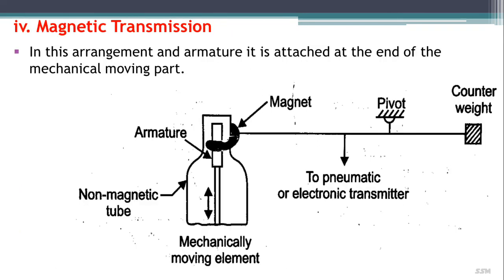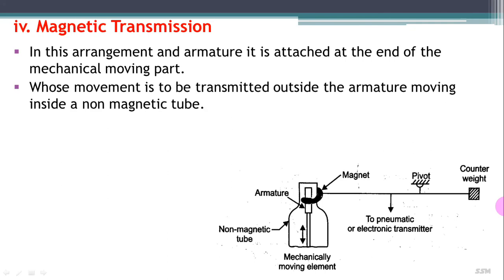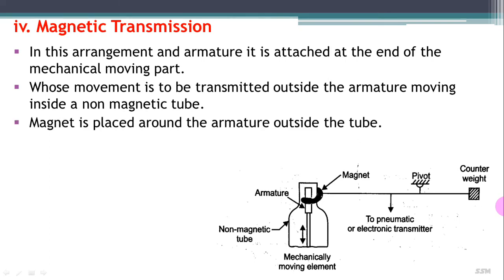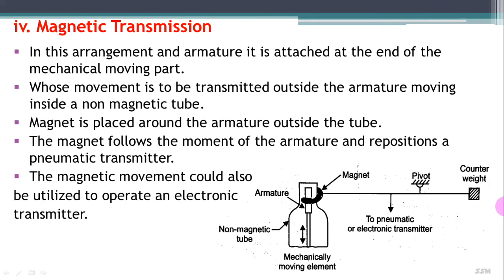Next is magnetic transmission. The arrangement contains an armature and a non-magnetic tube within which a mechanical movement element is attached, and the magnet arrangement is connected to a counterweight and a pneumatic or electric transmitter. An armature is attached at the end of the mechanical moving part whose movement is to be transmitted, inside the non-magnetic tube. A magnet placed around the armature outside the tube follows the movement of the armature and repositions a pneumatic transmitter. The magnet movement could also be utilized to operate an electronic transmitter.